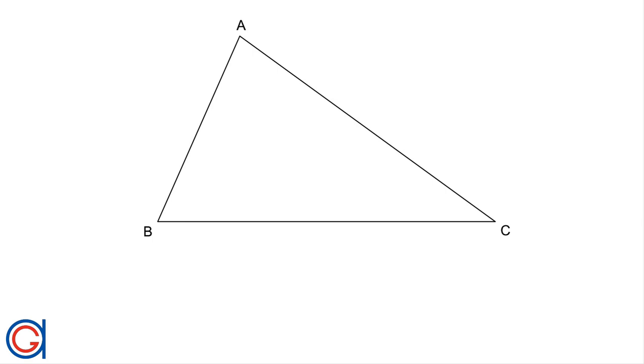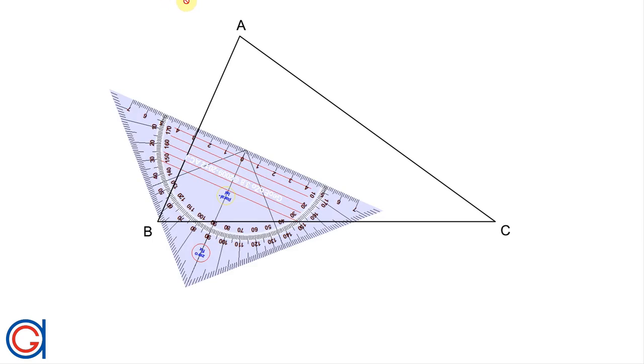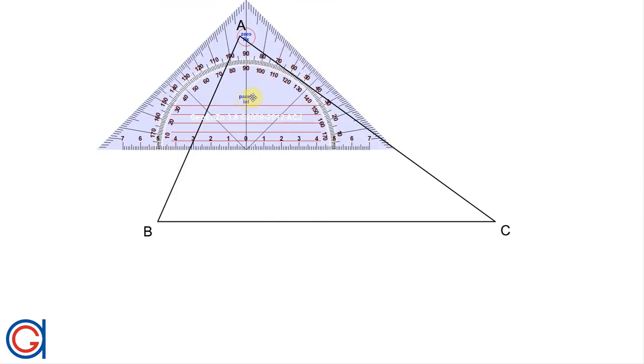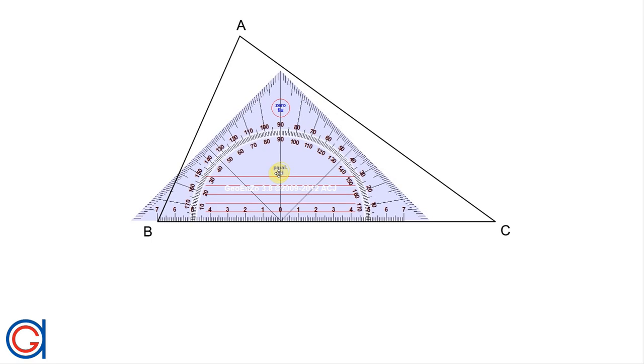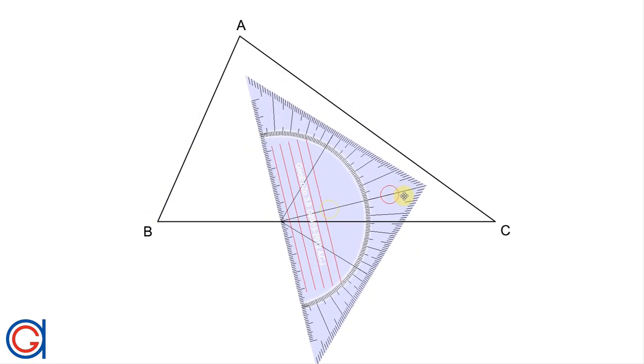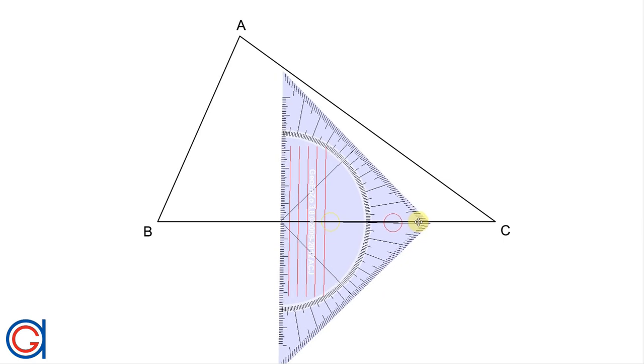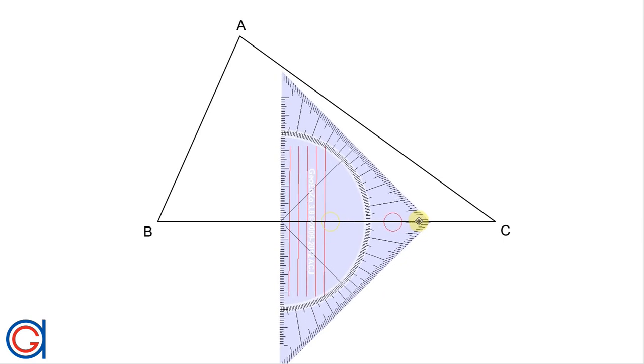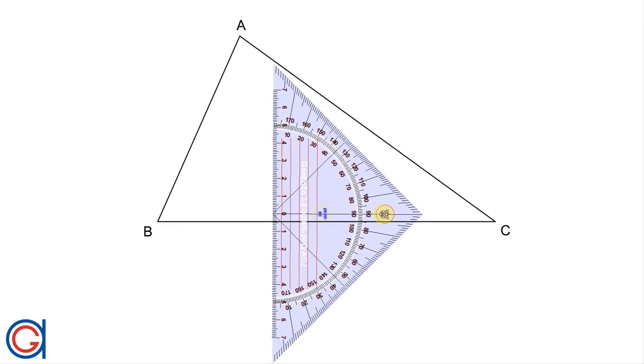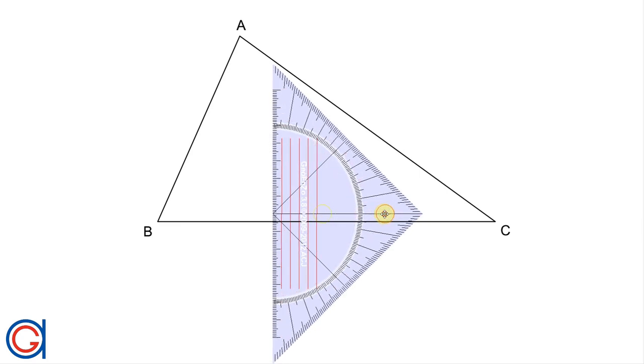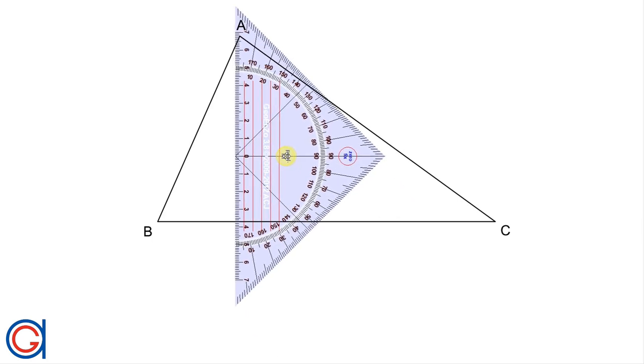So now to locate this orthocenter we are going to work out the perpendicular heights of each side. Setting our protractor perpendicular to the line segment BC and going through vertex A, we will draw our perpendicular height as can be seen here.